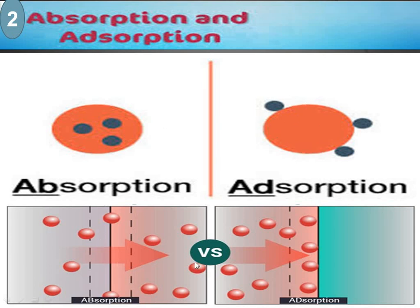We can see that in absorption, particles move from one side to the other by crossing the boundary. But in adsorption, particles cannot cross this boundary — they just stay on the surface of the boundary.